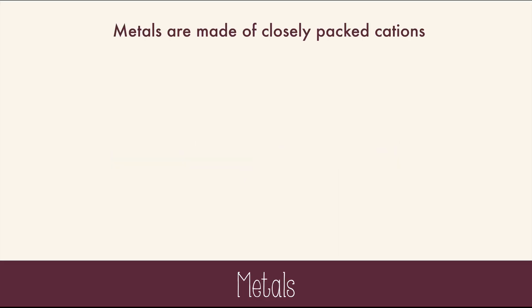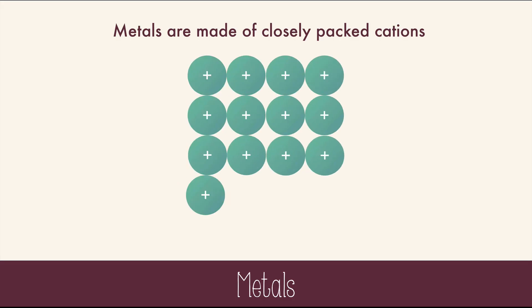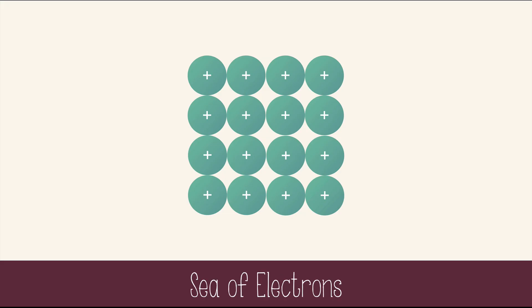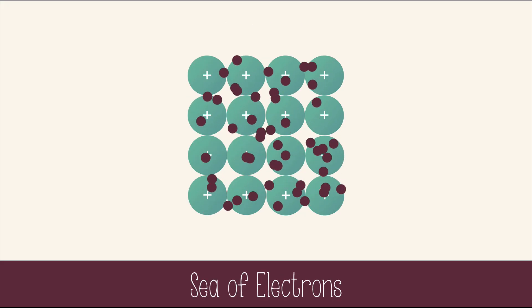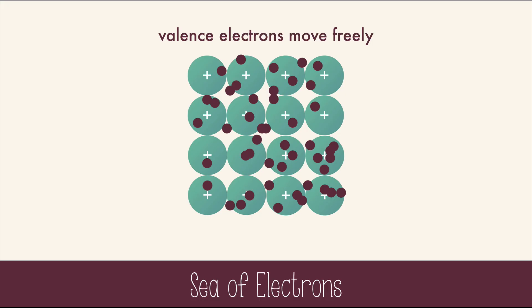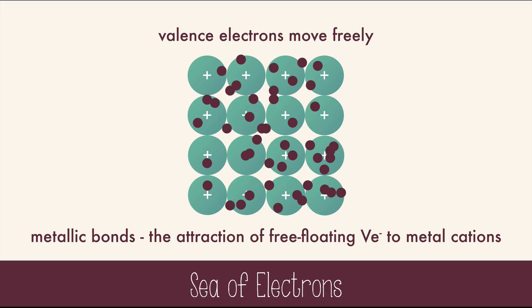Metals are made of closely packed cations, not neutral atoms like in ionic or covalent bonds. The reason these cations aren't instantly repelled from each other is that their valence electrons are freely moving, like a sea of electrons around the cations. Metallic bonds consist of the attraction of the free-floating valence electrons for the positively charged metal ions, which hold the metals together.